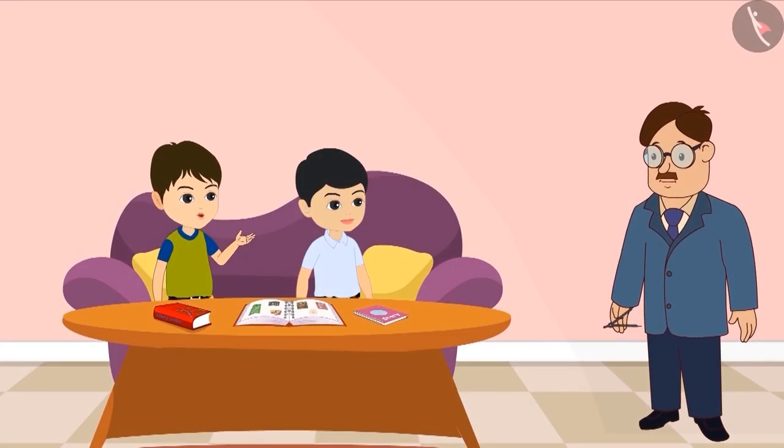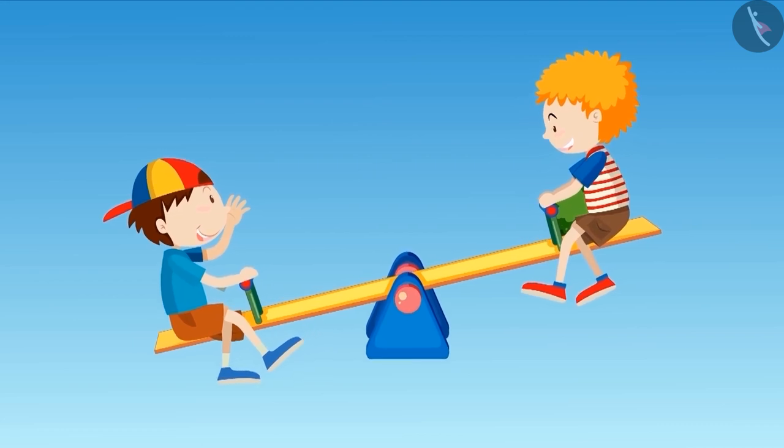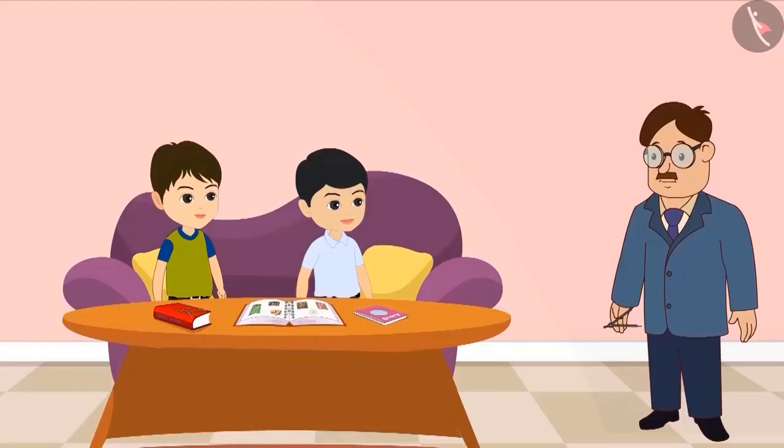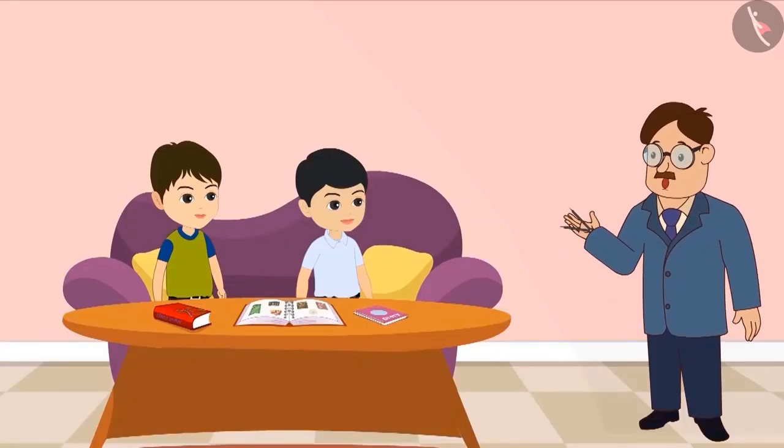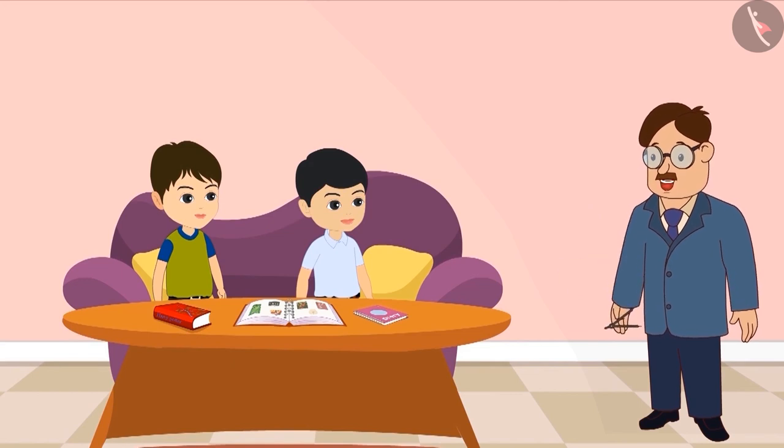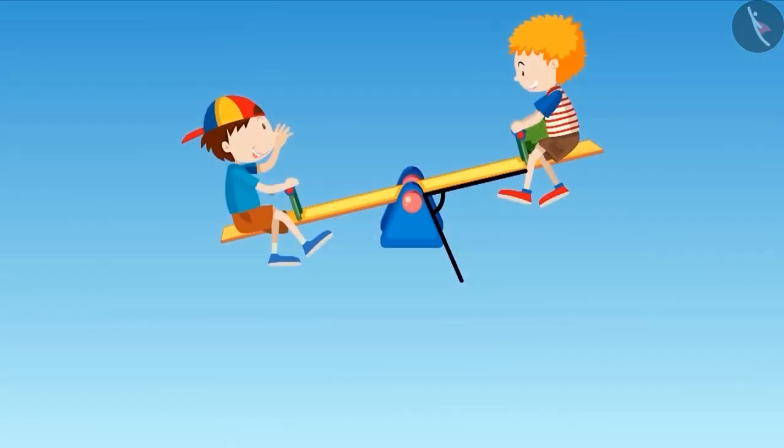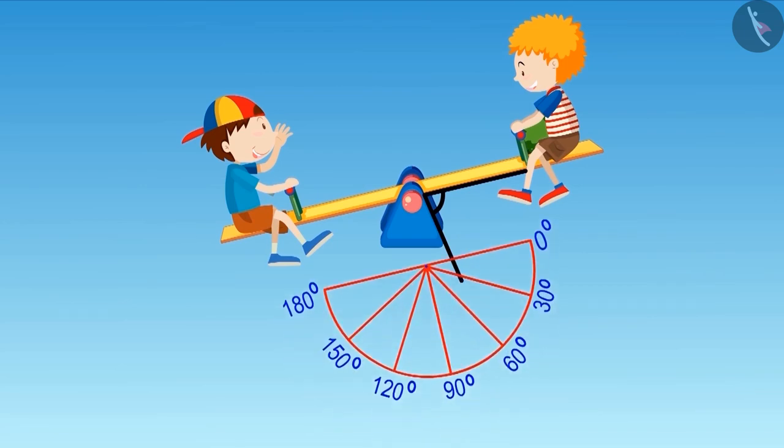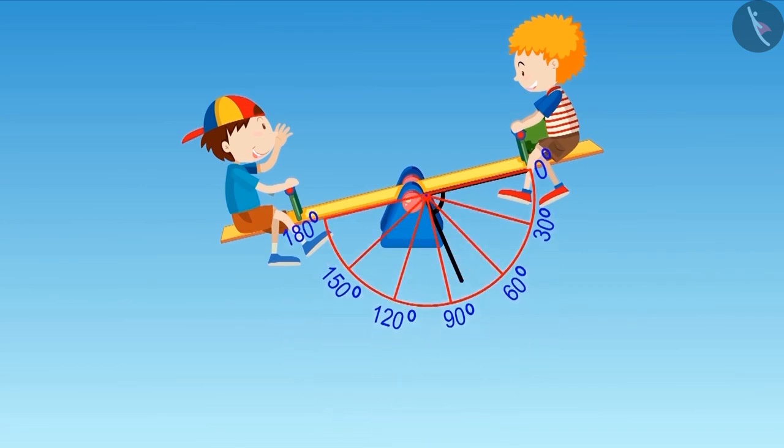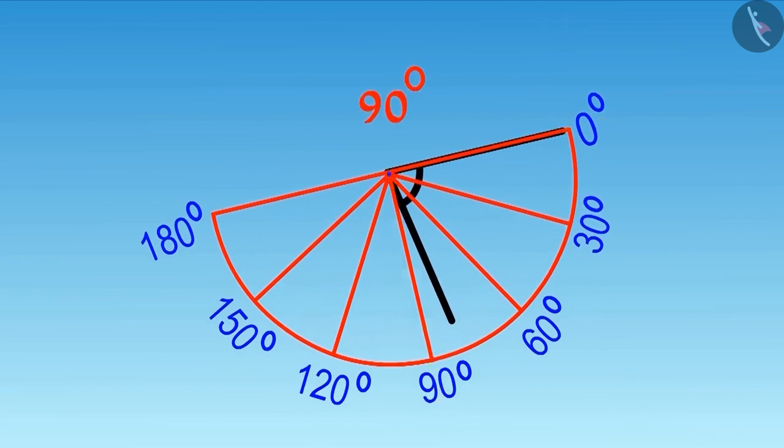Can I now make an accurate measurement of the angle of the seesaw with the help of this protractor? Yes, sure Bholu! To get the correct measurement of the angle of the seesaw, we will place the protractor above the angle like this. See, the measurement of this angle is slightly less than 90 degrees.